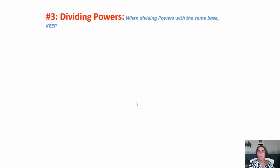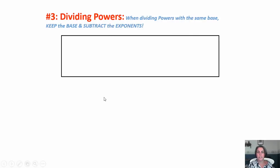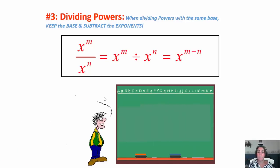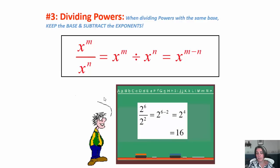Dividing powers: when dividing powers with the same base, keep the base and subtract the exponents. So x to the m over x to the n means x to the m divided by x to the n, which equals x to the m minus n. Here's an example: two to the sixth over two to the second becomes two to the sixth minus two, or two to the fourth.